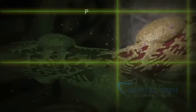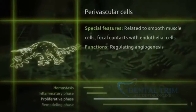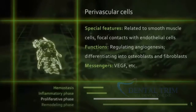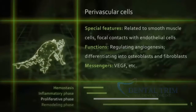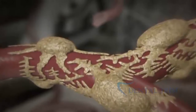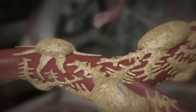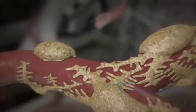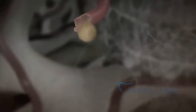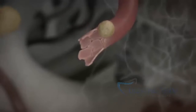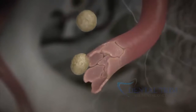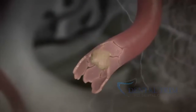Perivascular cells are mesenchymal stem cells found on blood vessels. They migrate along the VEGF gradient into areas of low partial oxygen pressure, where they form new blood vessels that finally integrate into the existing vascular network. Angiogenesis restores the oxygen supply and forms the foundation of bone healing.